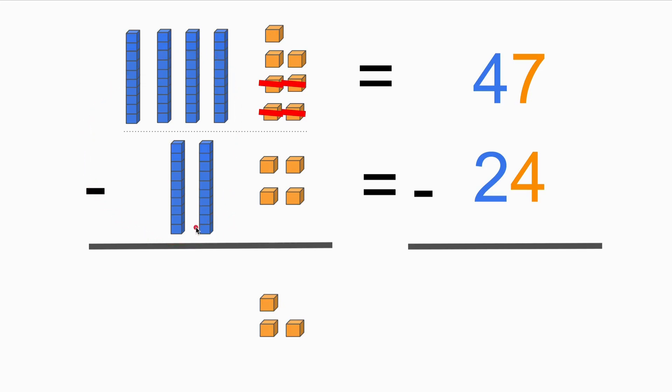Let's take a look at the tens place now. We have four here and we have two here. So basically we need to erase one, two, we need to erase the two blocks in the first row.